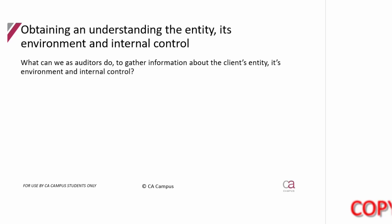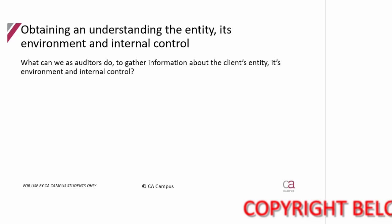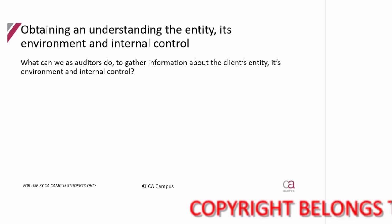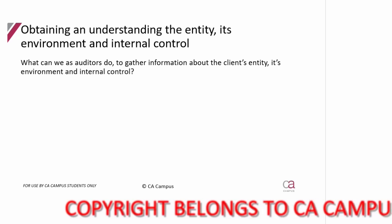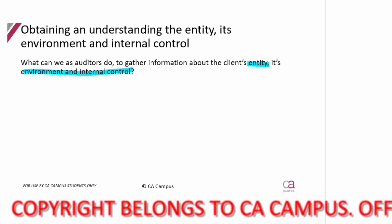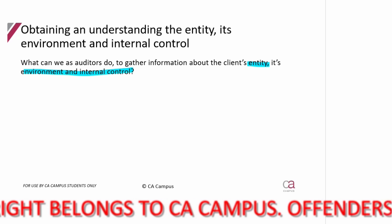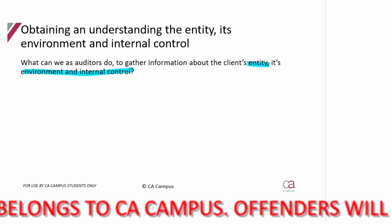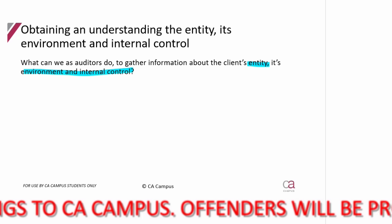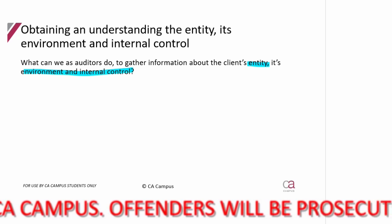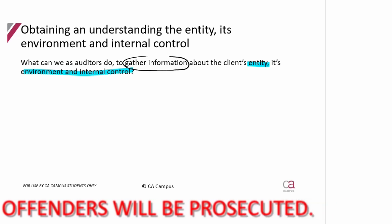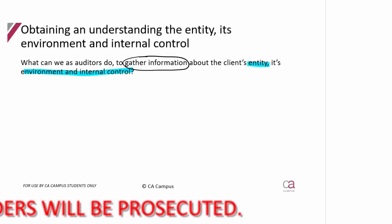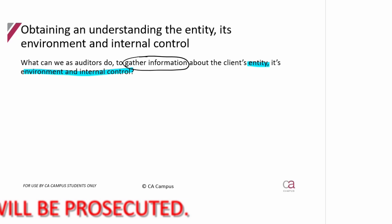This is the last part of the lecture. I now want to discuss how we as auditors gather information about the client's entity, its environment, and internal control. How do we get that information? Remember, we are not testing anything at this point — we are just trying to understand. We're gathering information so that we can identify risks, but we're not doing any testing. So how do we get this information?